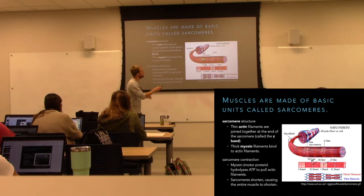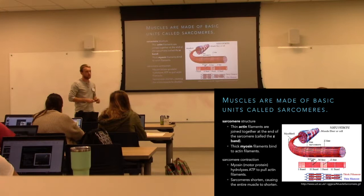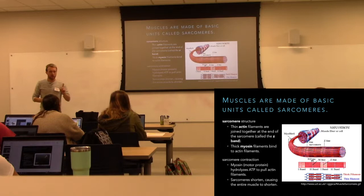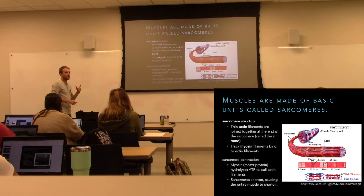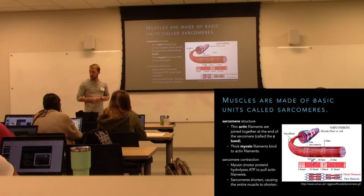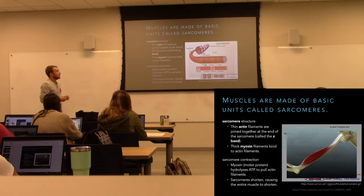Sarcomeres come together to form bands of protein called myofibrils. Myofibrils are found in muscle fibers, or myocytes — muscle cells. These aren't single cells really; it's many cells that fuse their cytoplasm, so you'll find a bunch of different nuclei in each muscle cell. Because these structures are huge, it couldn't be a single cell — so many cells fuse together to form a syncytium.